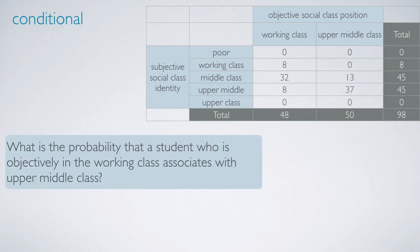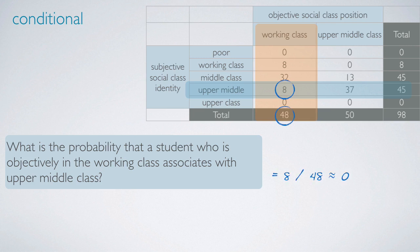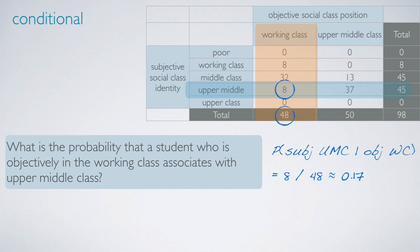Lastly, what is the probability that a student who is objectively in the working class associates with upper middle class? We're looking for students who are actually working class but associate with upper middle class. There are 8 students that meet this criteria among all 48 who are working class, so the probability is 8 over 48, roughly 17%. We denote this as the probability of subjective upper middle class given that the objective class is working class. We call this a conditional probability because we first conditioned on the working class and then calculated the probability based on counts only in that column.